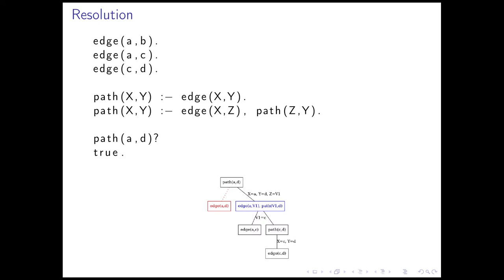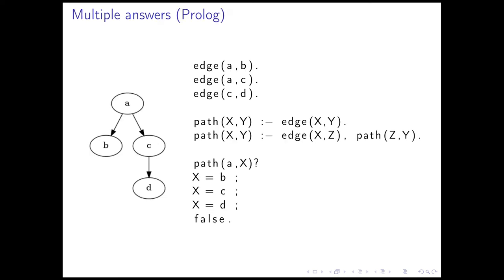In this case, there were only constants in our goal, but we can also solve goals where there are variables. For example, we might be interested in all the nodes which are connected to node A. We can write this as a goal path A X, and we want to figure out all the X which somehow match. We can run this analysis in Prolog, and it will return us X equals B, X equals C, and X equals D. Finally, it will answer false, which we will understand shortly.